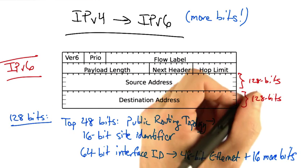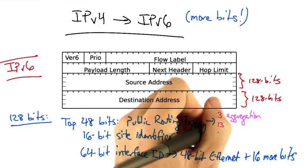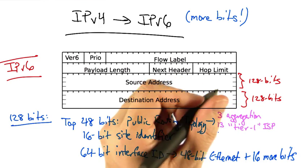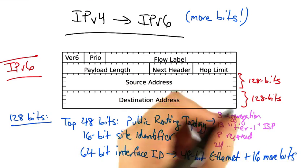The top 48 bits can be broken down further. They include 3 bits for aggregation, 13 bits for a top-level provider, something like a Tier 1 ISP, 8 reserved bits, and 24 additional bits.